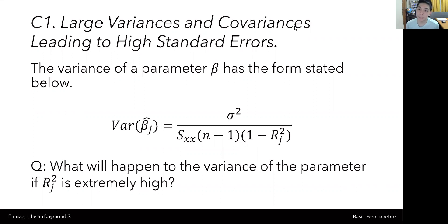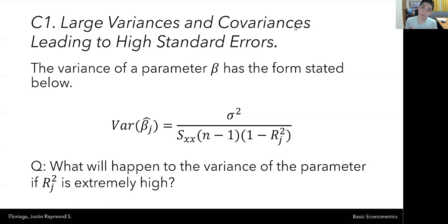The very first consequence is that when multicollinearity is present, it tends to increase the variances and the covariances, which leads to higher standard errors. Effectively, when there is severe multicollinearity, the variance of each estimator — or each parameter that we estimate — increases, and because of that, the standard errors increase as well.